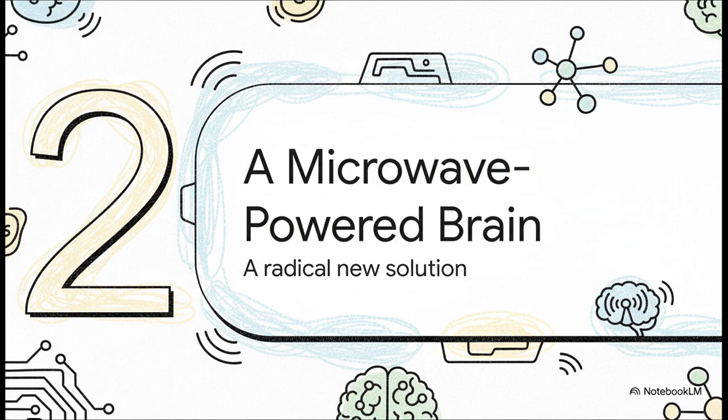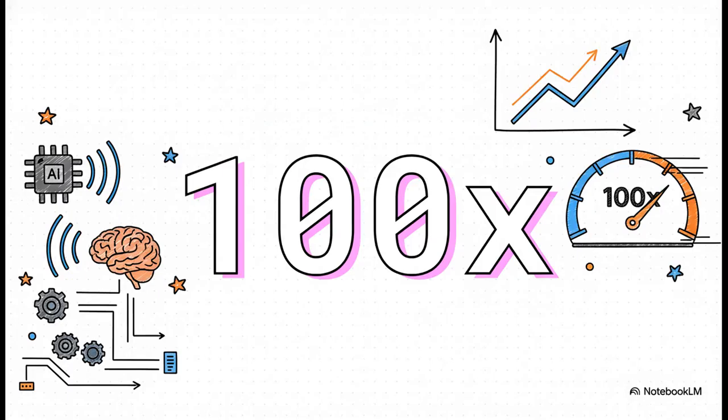It's a totally different way of thinking, and you gotta hear these numbers. You ready for this? This new chip they built can do some really complex calculations 100 times faster than a top-of-the-line digital chip. Let me say that again, not 100% faster, 100 times. That's insane.